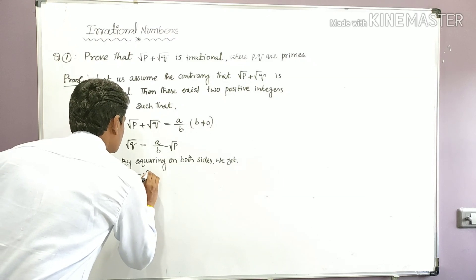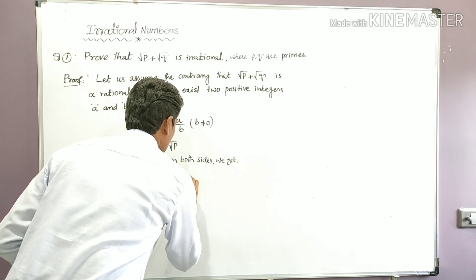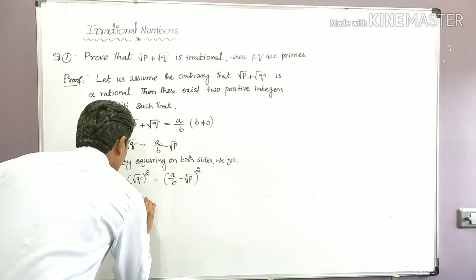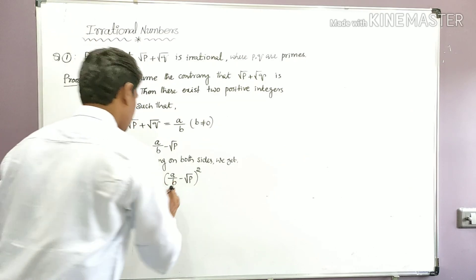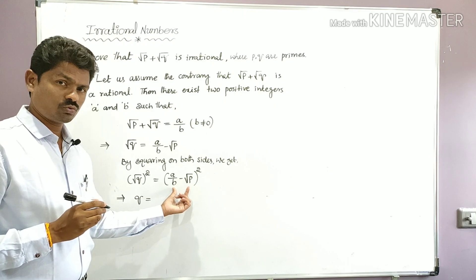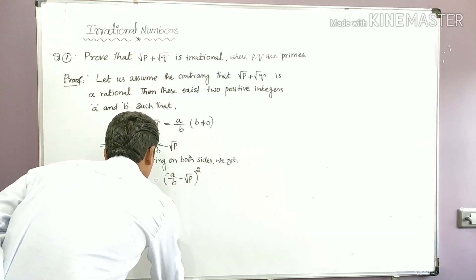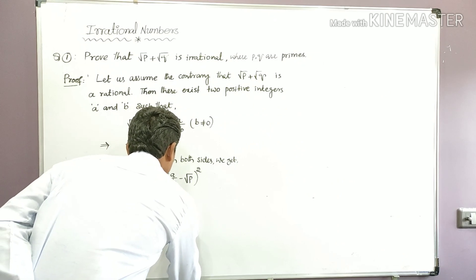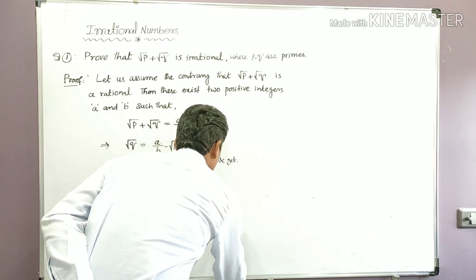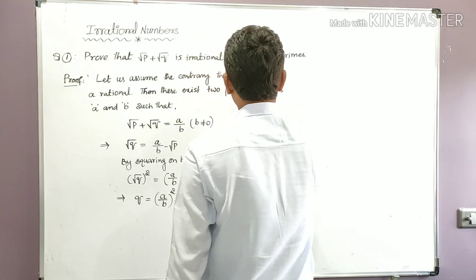On the left hand side, (√q)² = q. On the right hand side, (a/b − √p)². Expanding using the (a − b)² = a² − 2ab + b² formula: q = (a/b)² − 2·(a/b)·√p + (√p)². So q = a²/b² − 2(a/b)√p + p.